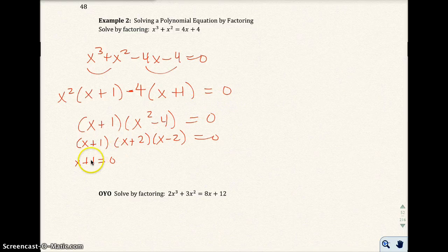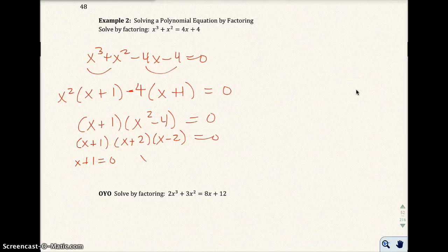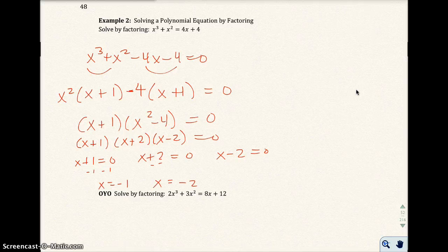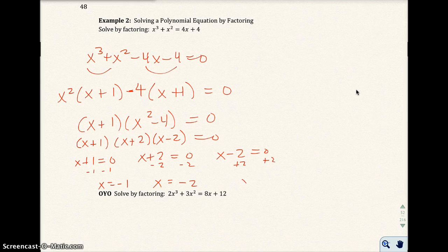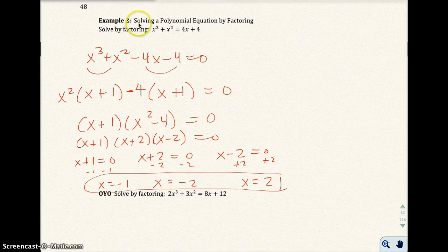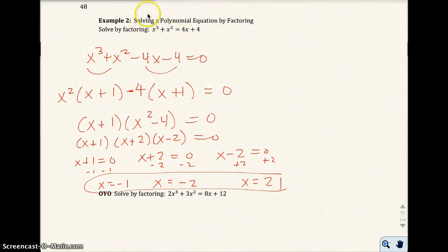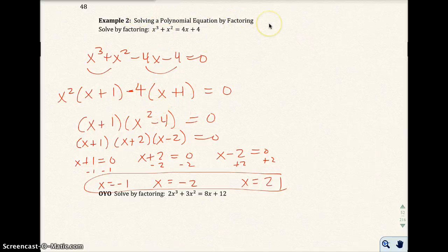I set each of these equal to 0. Some of you can skip this step if you already know what x equals. I'll start doing that as the course goes further. So I get x equals negative 1, x equals negative 2, and x equals 2. Notice we had a third degree equation with three solutions. And again, you can check these. If you check these solutions, make sure you check them into the original equation. Don't check them here because you could have made a mistake. Check them in the original.